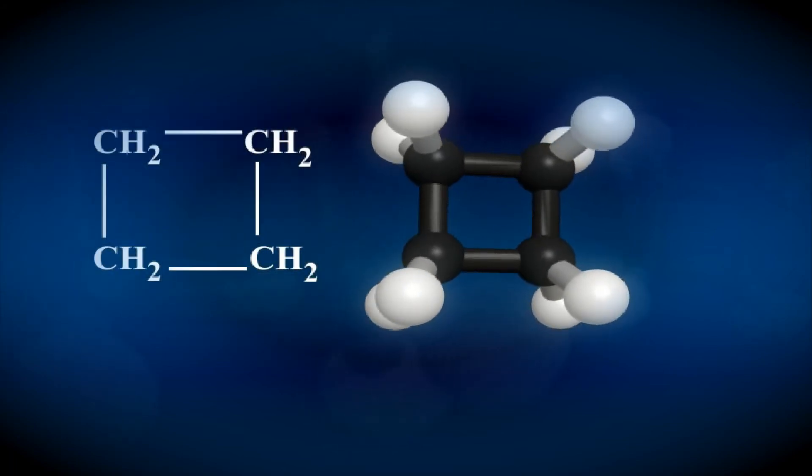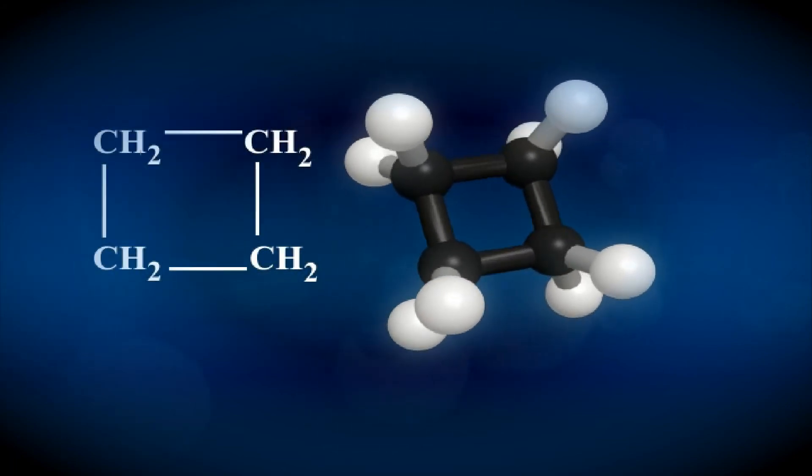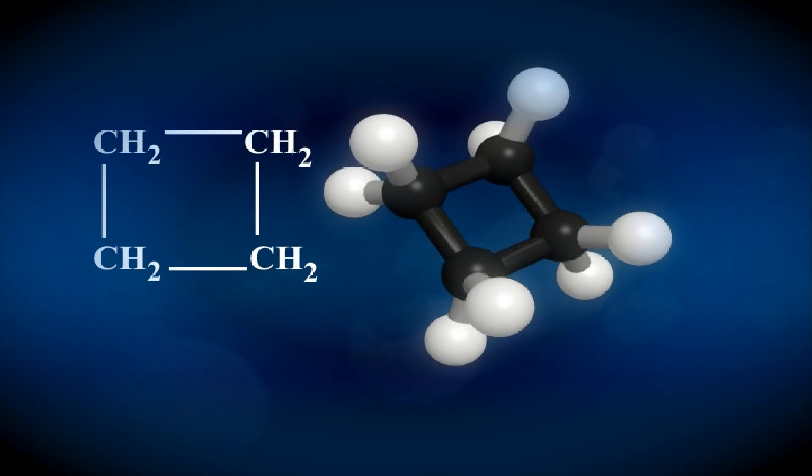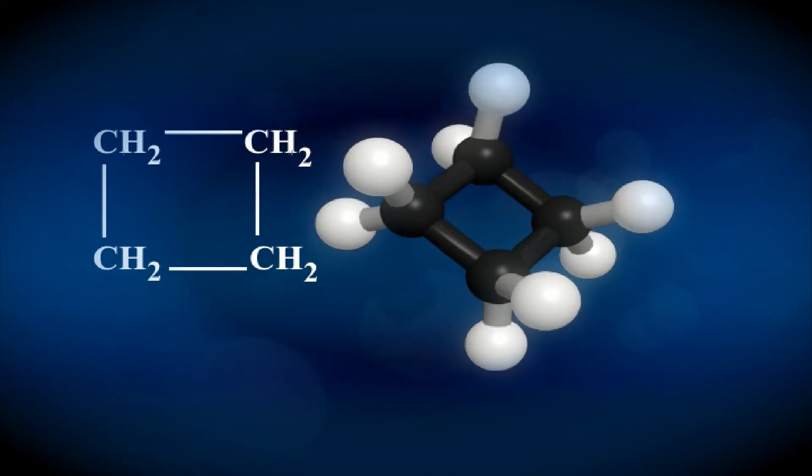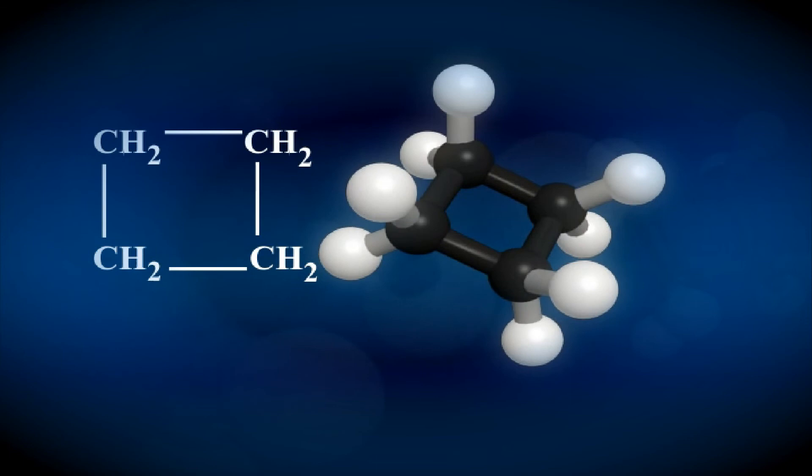In addition to branched and straight chain compounds, carbon with its catenation property forms rings also. Here we have an example of cyclobutane.